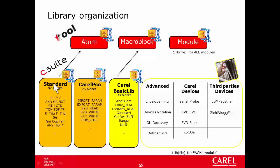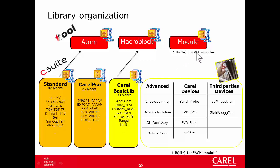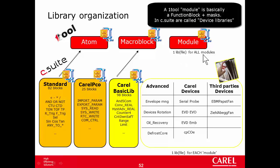The Standard and the Karel Pico libraries correspond more or less to the Atom library in MonTool, and the Karel Basic Lib corresponds more or less to the Macroblocks library, while the structure of the other libraries is different. In MonTool there is one library for all modules, basically for all other blocks. The advantage is that there is just one more library.